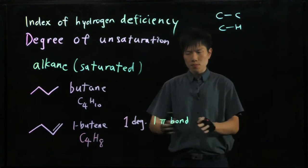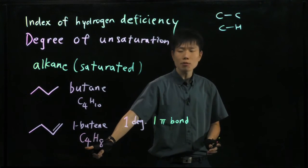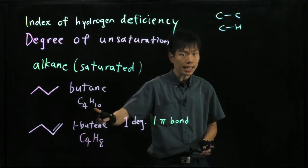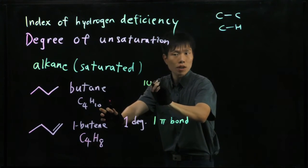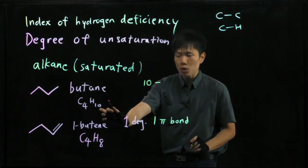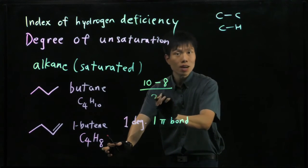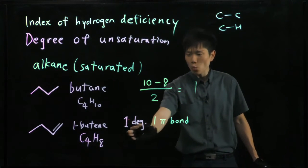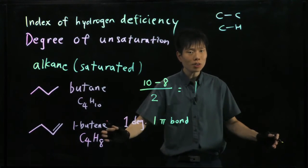To get 1 degree, we take the number of carbons — which can be easily counted — and get the alkane formula, which in this case becomes C4H10. Then we take the alkane number of hydrogen atoms and subtract the actual number of hydrogen atoms that we have, which is 8, and take that number divided by 2. What do we have? 1 — exactly. That's why it is 1 degree of unsaturation, which means we could have 1 pi bond in the molecule.